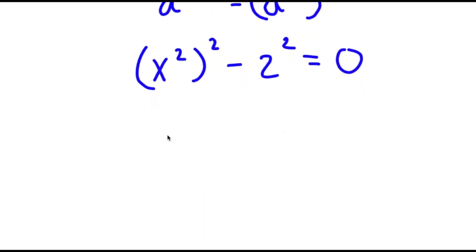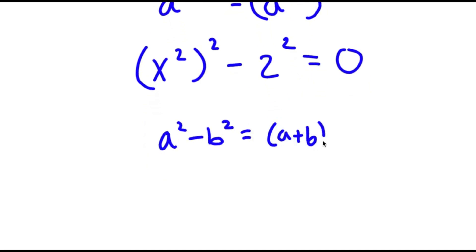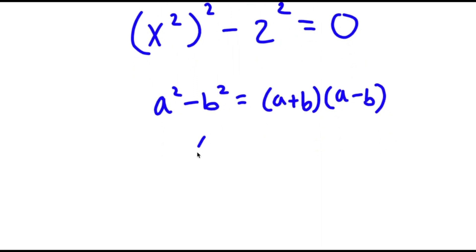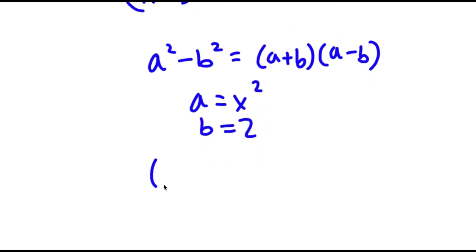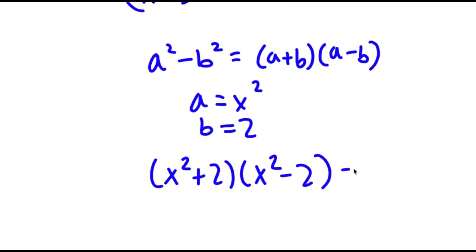If I have something in the form a squared minus b squared, this is equal to a plus b times a minus b. So in this case, a is x squared and b is 2. So I have x squared plus 2 times x squared minus 2 is equal to 0.